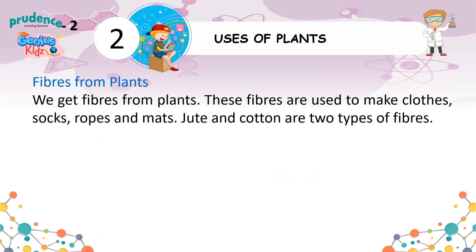Fibers from plants: We get fibers from plants. These fibers are used to make cloth, socks, ropes, and bags. Jute and cotton are two types of plant fibers.